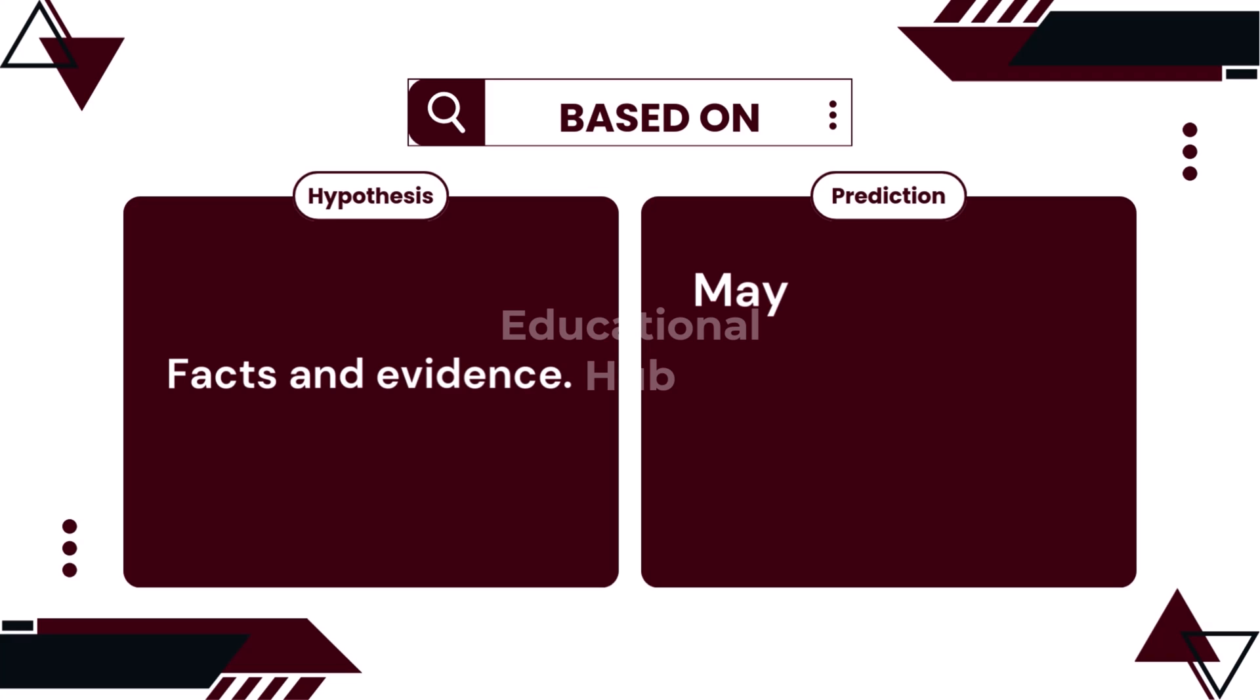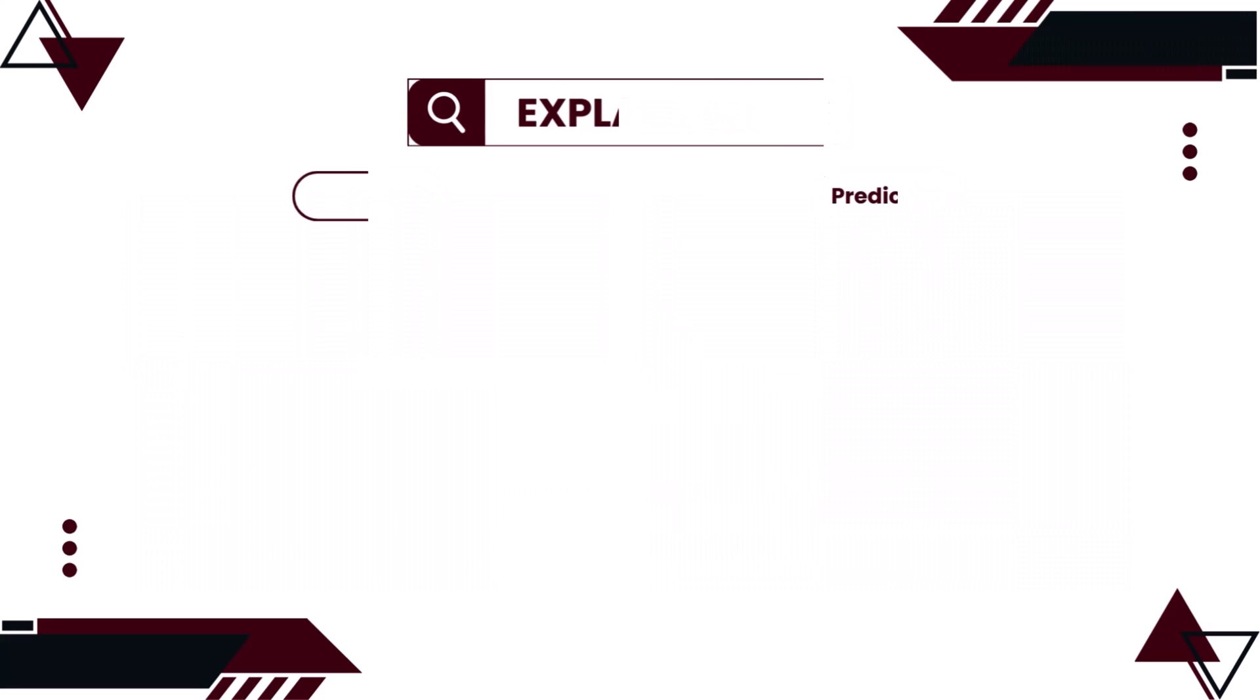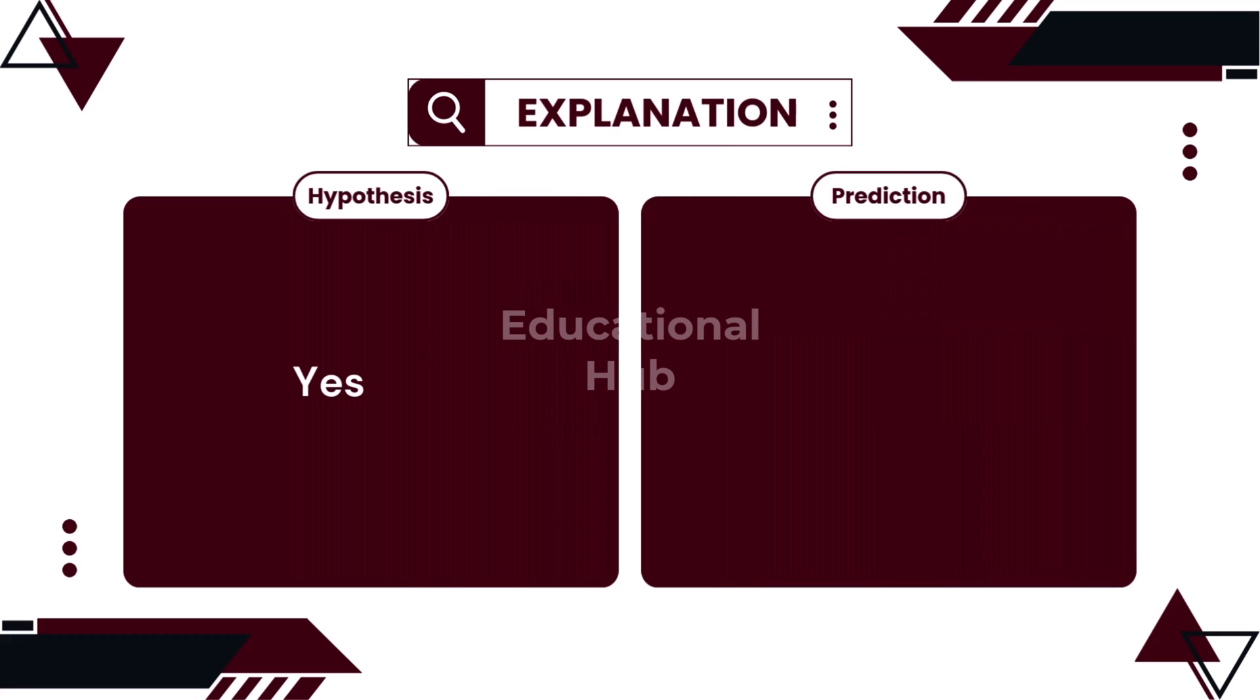As against this, predictions are based on knowledge and experience of the person making it, but that too not always. 5. Hypothesis always have an explanation or reason, whereas prediction does not have any explanation.